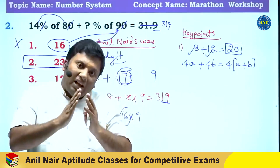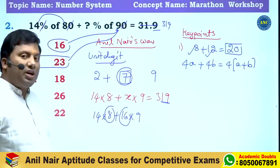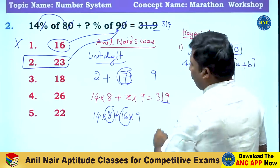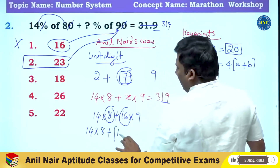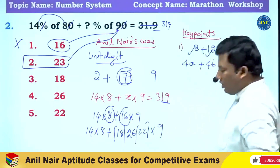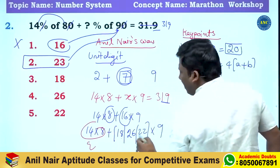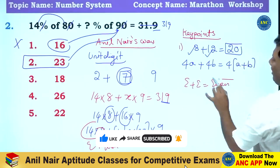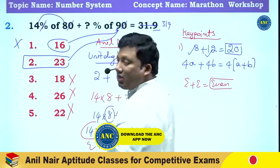Divisibility rule is an important tool here. 8 is divisible by 4, and 16 into 9 — if both terms are divisible by 4, the answer must be divisible by 4, which is not possible here. For options like 18, 22, or 26, consider the even/odd logic: an even number into an even number is even, and even plus even is even. But 319 is odd, so those options cannot be the answer either.